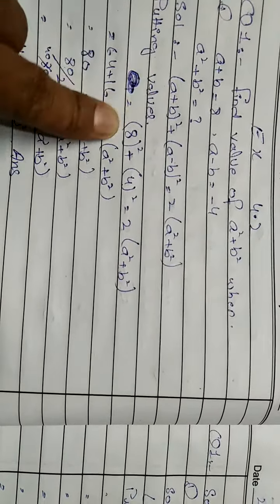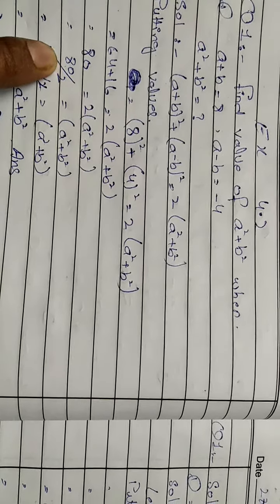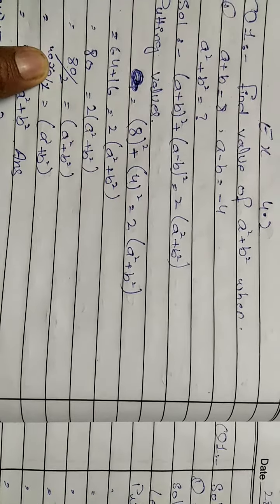It is 8² which is 64, and (-4)² is 16, equal to 2(a² + b²). 64 plus 16 equals 80. After dividing by 2, we get 40.